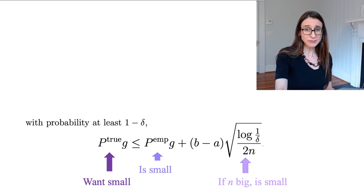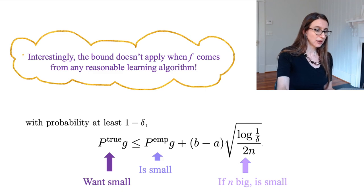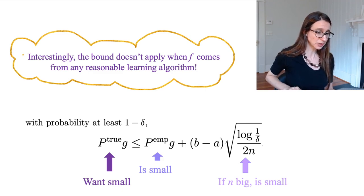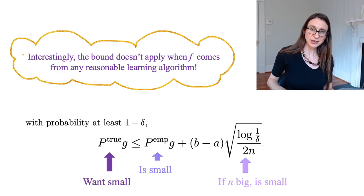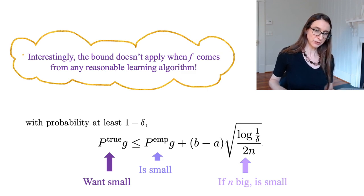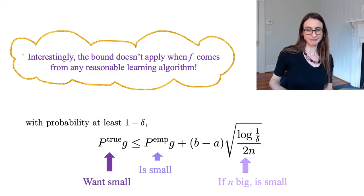However, I should mention there's a major caveat to this formulation because you might think we're done, but we're actually not. And in fact, this bound is totally useless. So interestingly, the bound doesn't apply when f comes from any real algorithm at all. And so that's why the story doesn't end here. And in fact, this is where the interesting part of the story just begins. And if you want to find out why this is true, hang around for the next video.